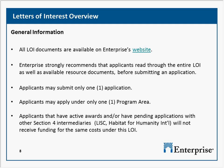Some other things you need to be aware of: applicants may only submit one application and may apply under one program area. Any applicants that have active awards or pending applications with other Section 4 intermediaries, which include LISC and Habitat for Humanity International, will not receive funding for the same cost under this LOI.